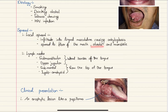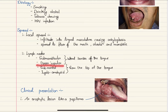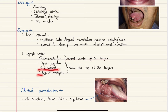Regarding lymph node spread, the tumor might spread to submandibular nodes or the upper jugular nodes through the lateral border of the tongue, or they might spread to submental nodes and the jugulodigastric nodes from the tip of the tongue.